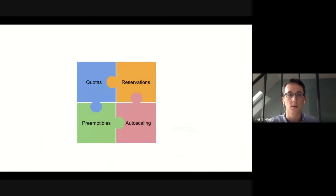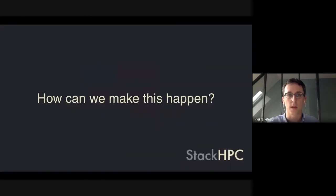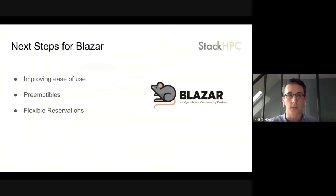With this in place, we can combine all our elements — quotas, preemptibles, autoscaling, and reservations — and build our Coral Reef. For Blazar specifically, there are a few steps we're planning to take. First, we'd like to improve ease of use so that users don't necessarily have to create reservations manually, but they could be automatically created by some quota management system. There's also the work on integrating preemptibles, which is already being developed upstream, and the concept of flexible reservations — which allows Blazar to know at any time how much resource is actually being used within each reservation.